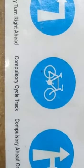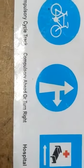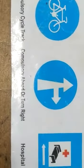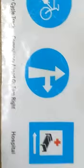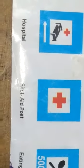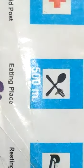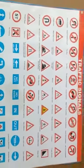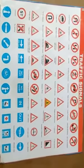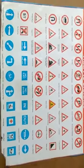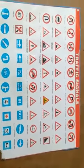This symbol belongs to compulsory cycle track. And this symbol belongs to compulsory ahead or turn right. And this symbol is hospital, and this is first aid post, and this is eating place, and this is resting place. So these are the symbols, friends, and thank you for giving me this opportunity. Please try to follow these rules and signals.